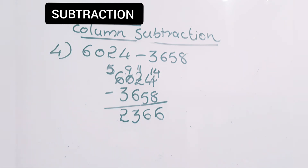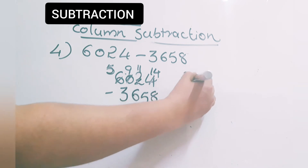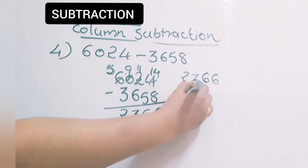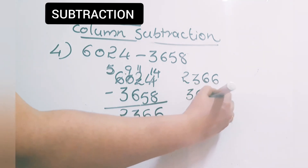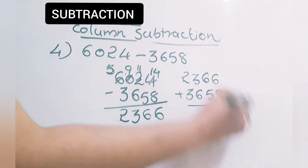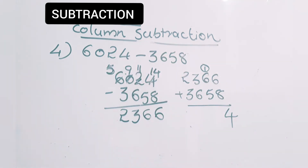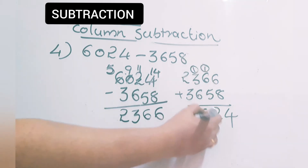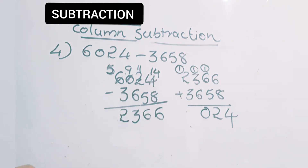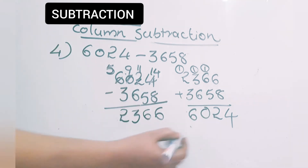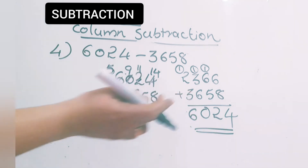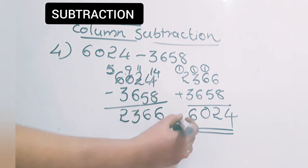Now let's check this answer through addition: 2,366 plus 3,658. 8 plus 6 is 14, carry 1. 6 plus 1 is 7. 7 plus 5 is 12, carry 1. 3 plus 1 is 4. 4 plus 6 is 10, carry 1. 2 plus 1 is 3. 3 plus 3 is 6. We get 6,024. In our question the first number is also 6,024 — these are the same, so our subtraction is correct.